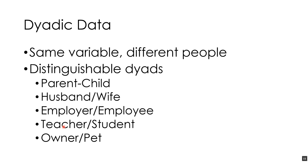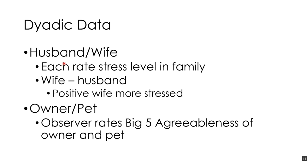The third type of data is dyadic data — the same variable from different people who are related to each other. Distinguishable dyads are pairs where roles are clear: parent-child, husband-wife. For example, we ask each spouse to rate the stress level in the family, then subtract the husband's score from the wife's score. A positive and significant result means the wife is significantly more stressed than the husband.